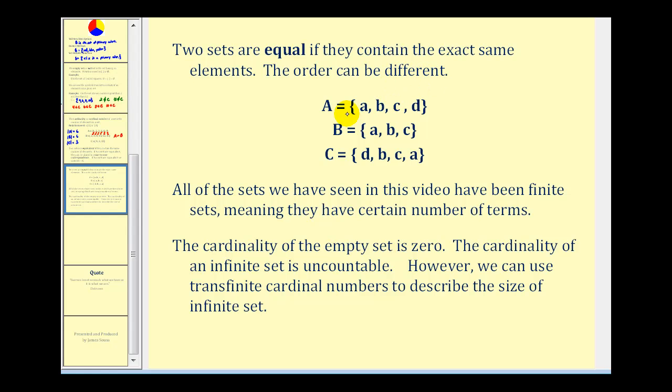So looking at these three sets here, notice that set A and set C have the same cardinality, meaning they have the same number of elements, and they also have the exact same elements. Set A and C contain little a, set A and C contain little b, set A and C contain little c, and set A and C contain little d. So they have the exact same elements, therefore the two sets are equal. Set A is equal to set C.